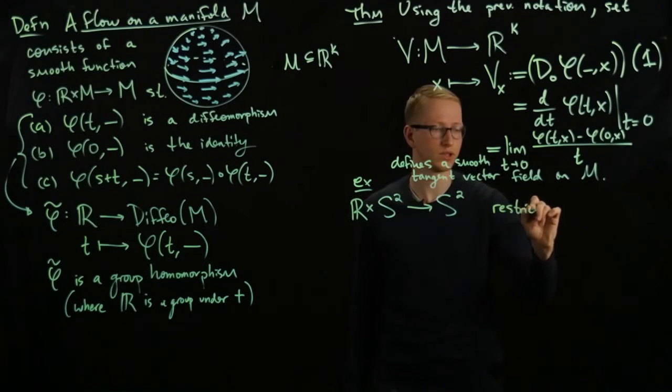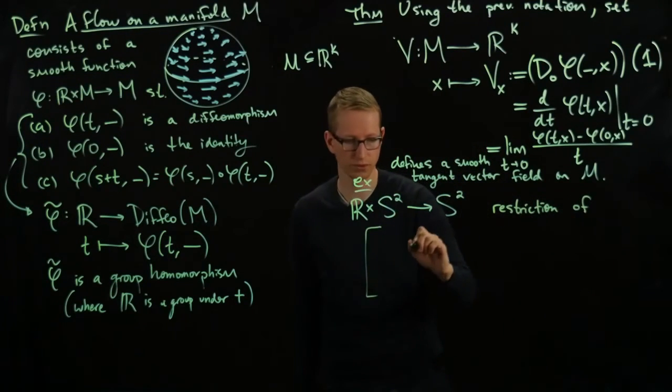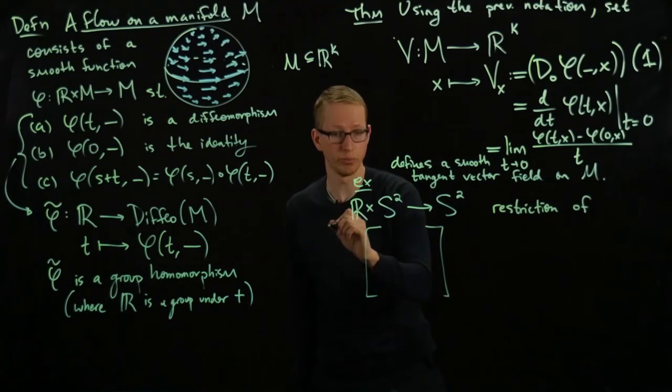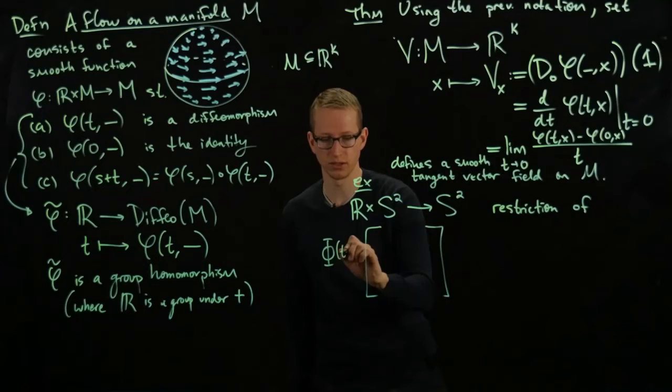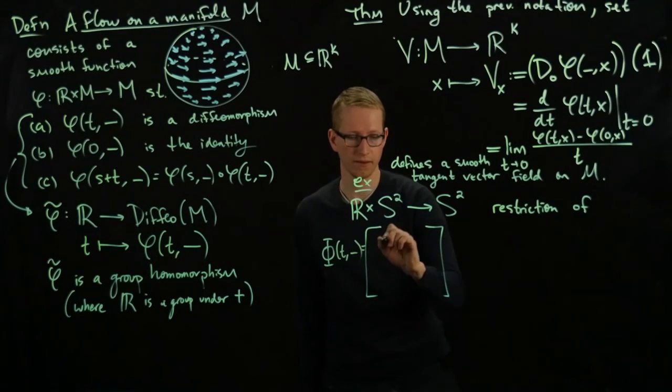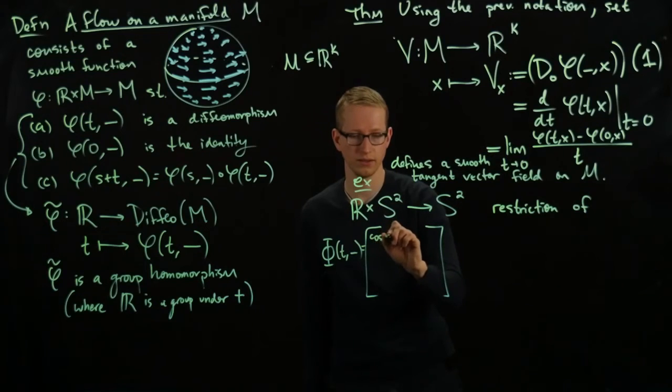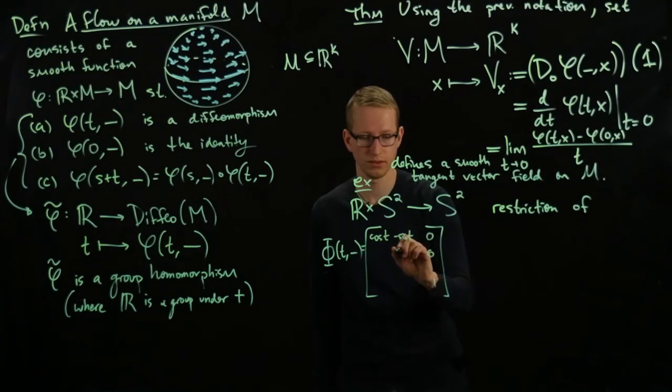And it's the restriction of the rotation along the z-axis. This is the restriction of the rotation. Let's call this big Φ, since I want to denote the restriction by lower case φ. And this is [cos t, -sin t, 0; sin t, cos t, 0; 0, 0, 1].